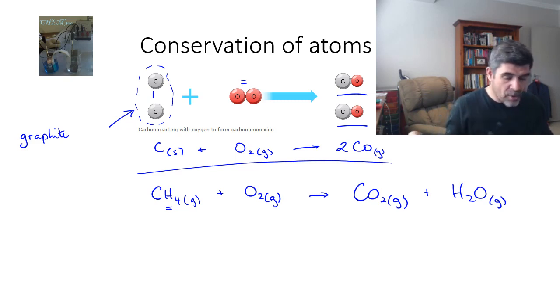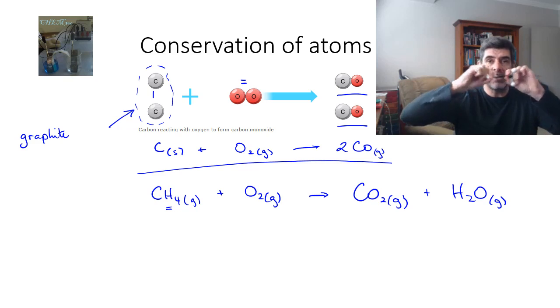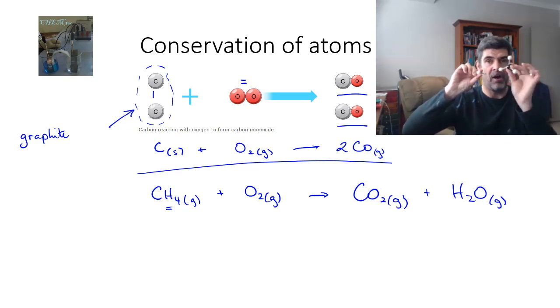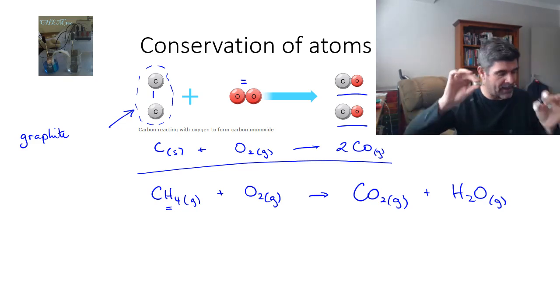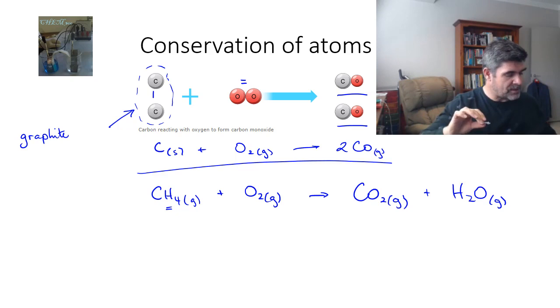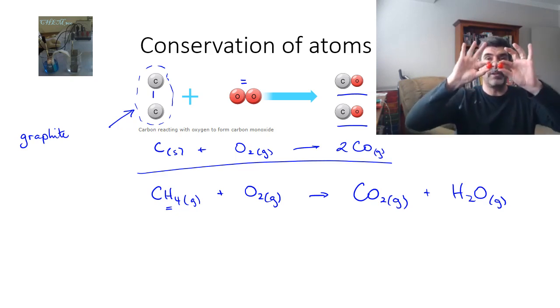Bonds are being broken here. So in order for this reaction to occur, a bond must be broken between the carbon and the hydrogen. In fact, between the carbon and all four of these hydrogens bonds must break. Those bonds must also break between the oxygen molecules. So we have to break these bonds as well.